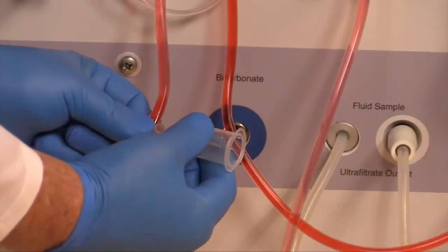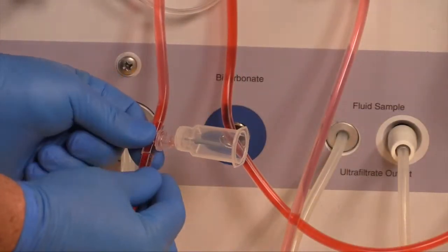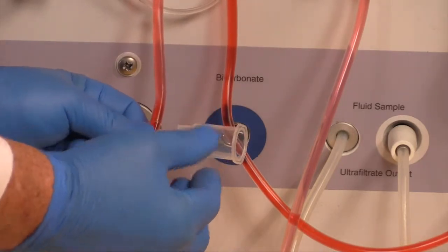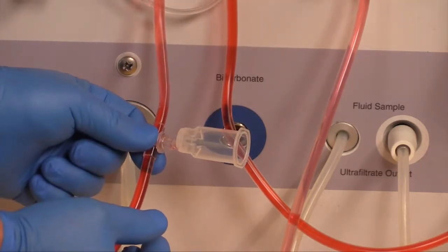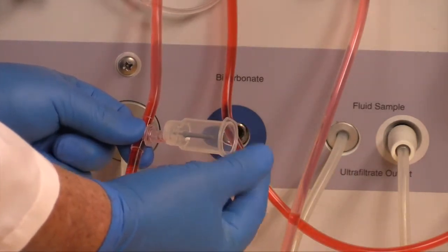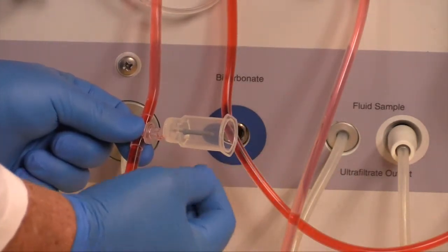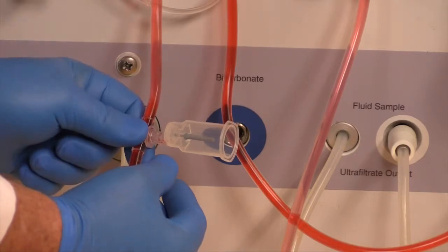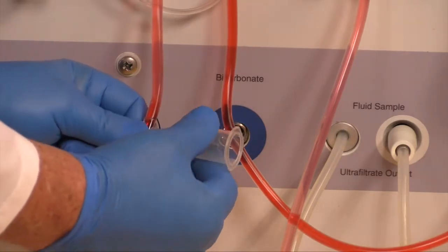If using a vacutainer, place male portion of vacutainer into Loxite, turn it to the right. Place blood tube in vacutainer to get the desired amount of blood, then turn to the right again and remove vacutainer.